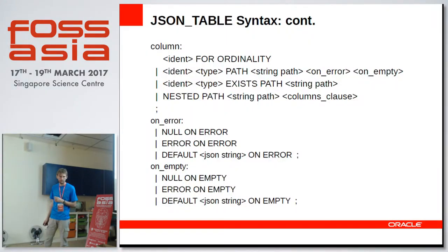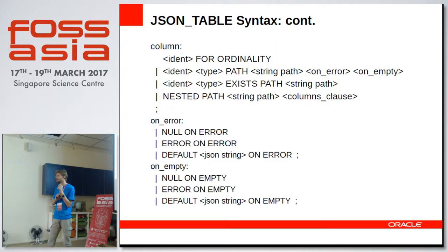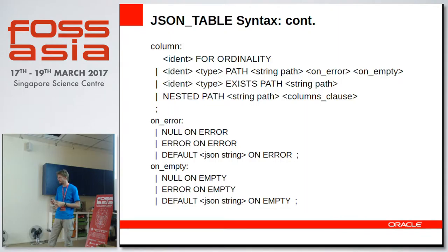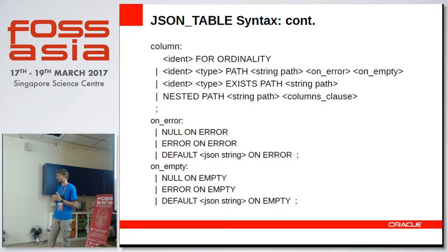There are four types of columns. First is FOR ORDINALITY, used to enumerate rows produced by the COLUMNS clause — each row gets its own incrementing number. Next is the extraction column, used for actually extracting data — it has a name, a result type, a path, and ON ERROR and ON EMPTY clauses to handle data that doesn't fit into the schema you're enforcing on the JSON.